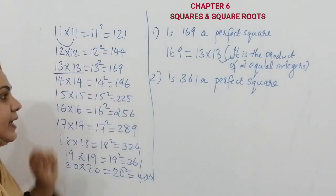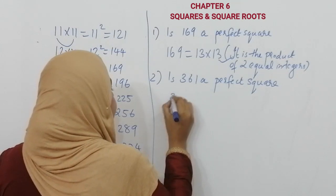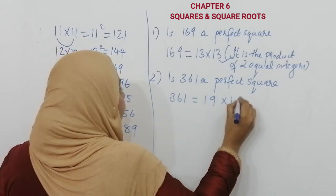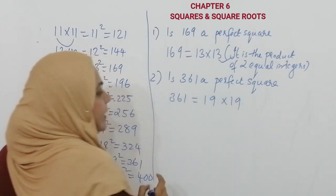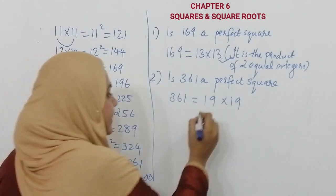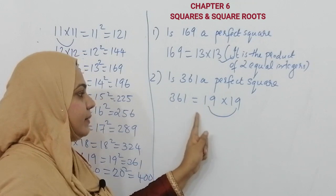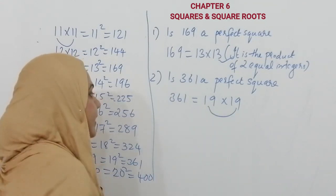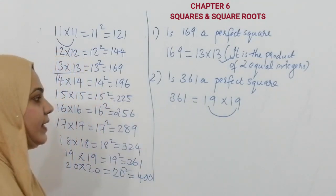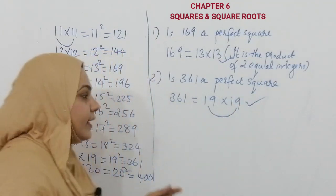Second question: is 361 a perfect square? Which table does it come from? You know 361 is the product of 19 into 19. So 19 multiplied by 19 — here you can see these are the same numbers, two equal integers, and you get 361. So that means 361 is a perfect square. Our answer is correct.